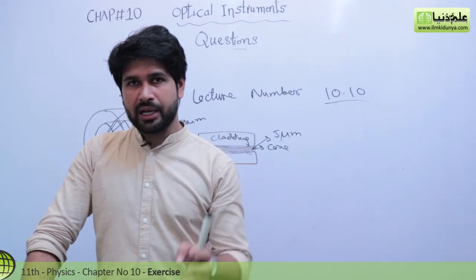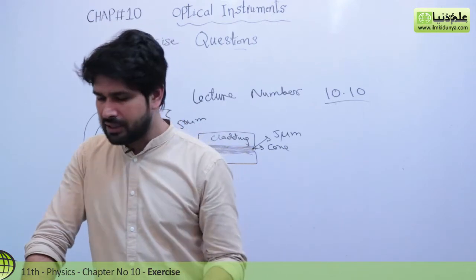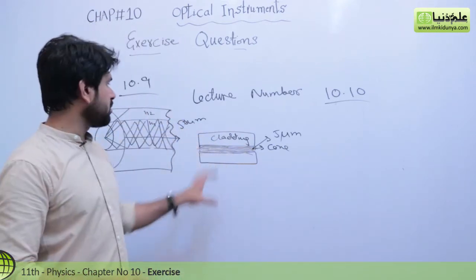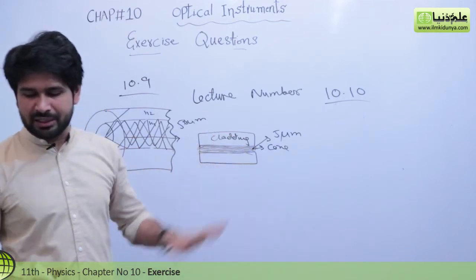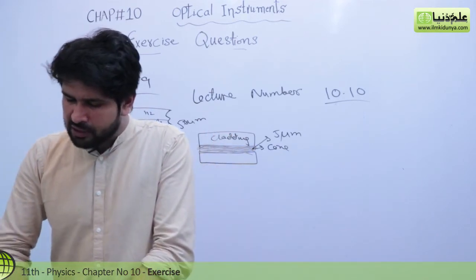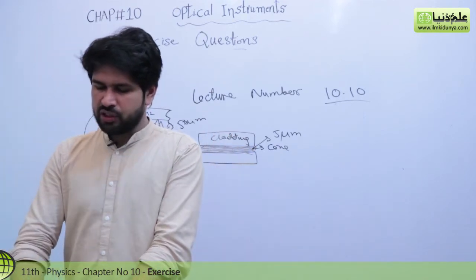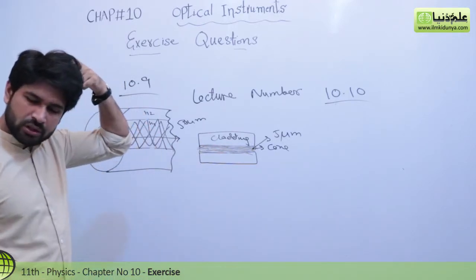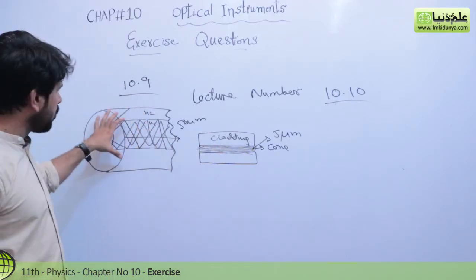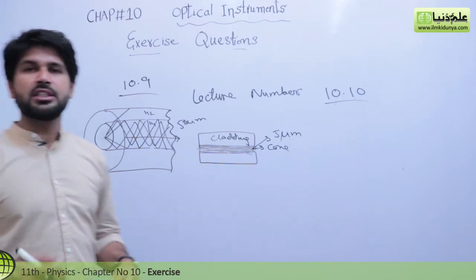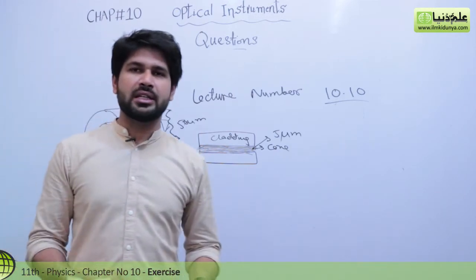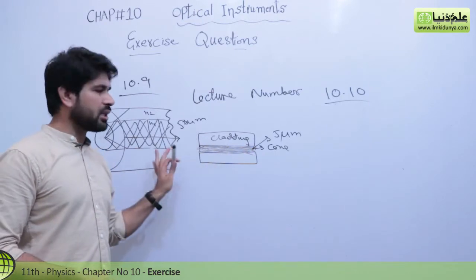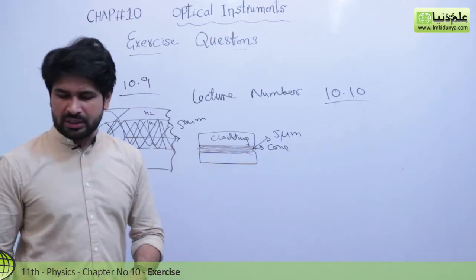With a single mode fiber, at one time we can send and receive 14 TV channels. Multi mode is for short distance because of dispersion of light in multi mode. The single mode diagram has been drawn, and this is the answer to why single mode is preferred.